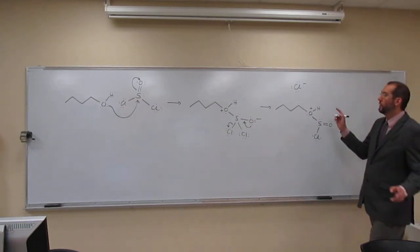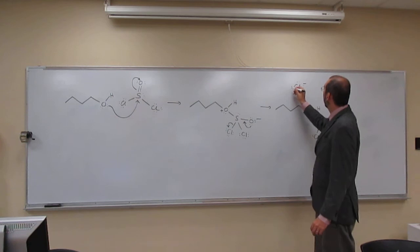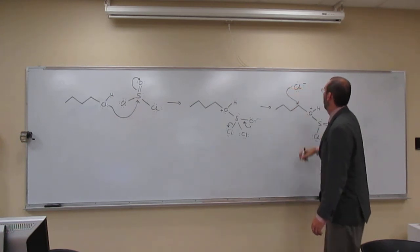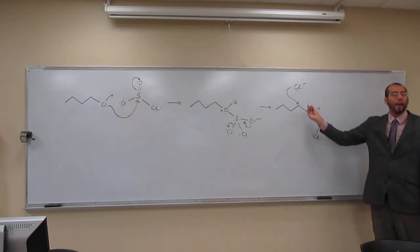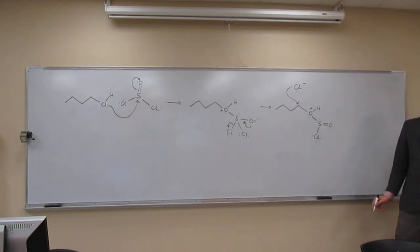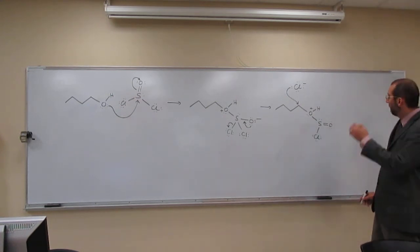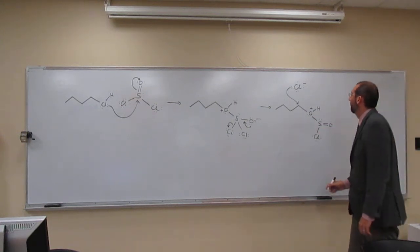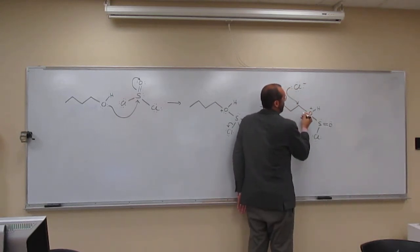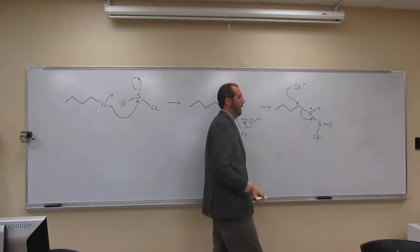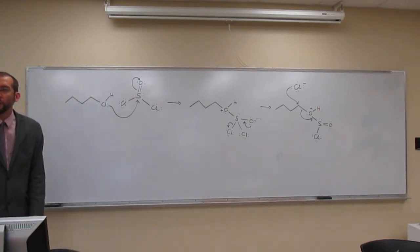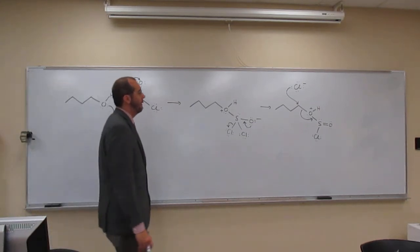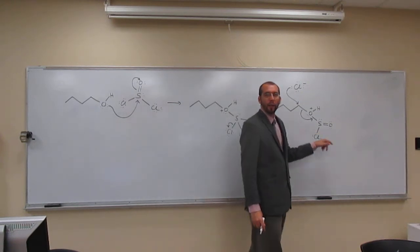Okay, so now here's the SN2 part. The chlorine is going to come and attack from the backside of this big leaving group. Is everybody okay with that? And then we're going to actually make a couple of other little pieces here. So the leaving group just doesn't leave like that. We're going to make that double bond there in between the sulfur and oxygen. And doing that is going to kick off the last chlorine.